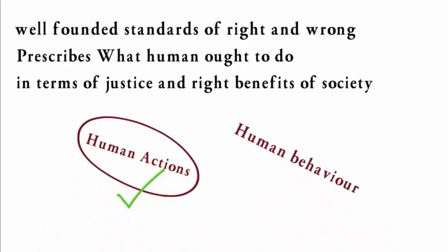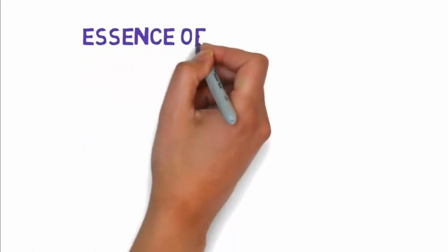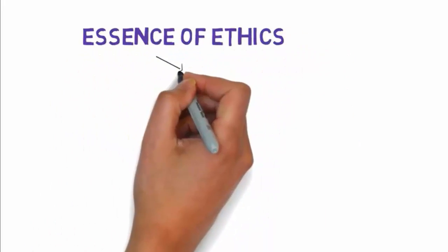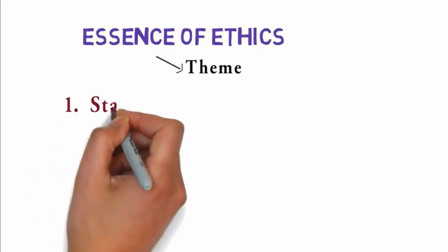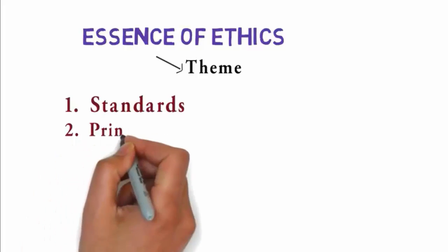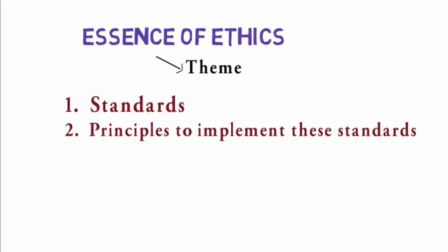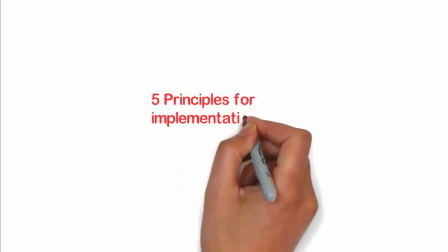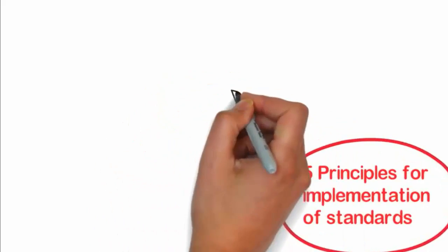What does ethics do? Ethics evaluates human action and examines human behavior. The essence of ethics — where essence means the central meaning or theme — has two parts: number one, standards, and number two, principles. To implement these standards, there are five principles.